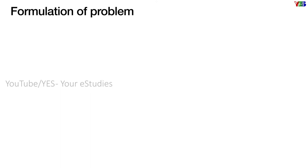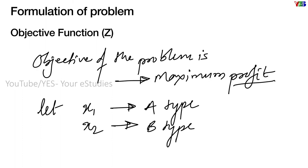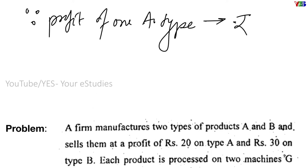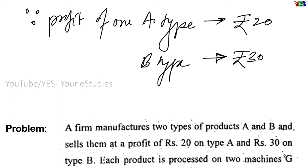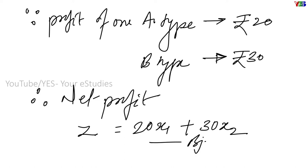For the solution, our first step will be to formulate the problem. We need to find the equation of objective function Z. The objective of the given problem is maximum profit. Let the firm manufacture x1 amount of type A product and x2 amount of type B product. Since the profit on one type A product is rupees 20 and on type B product it is rupees 30, the total profit on type A will be 20x1 and on type B will be 30x2. Therefore, net profit — which is our objective function Z — will be 20x1 plus 30x2.